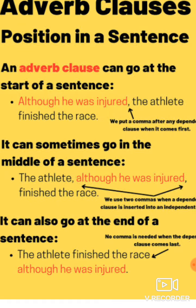Now, it can also go at the end of the sentence: 'The athlete finished the race although he was injured.' When the dependent clause comes at the end, no comma is needed — it's absolutely okay without one. So, these are the three ways in which adverb clauses can come in a sentence.